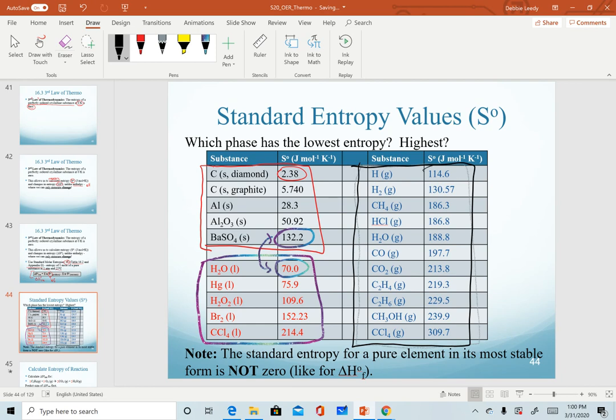Again, the smaller an atom or molecule, the smaller its entropy value is possible to be smaller than some of our liquids or even solids. So just for reference, you do not need to memorize these. You will always be given them or you can look them up.